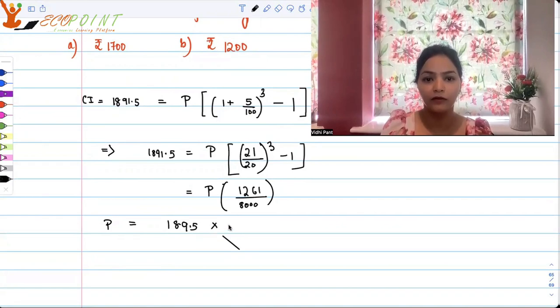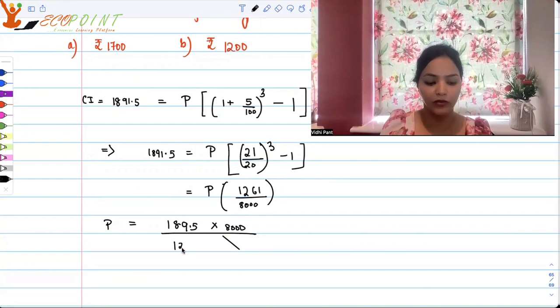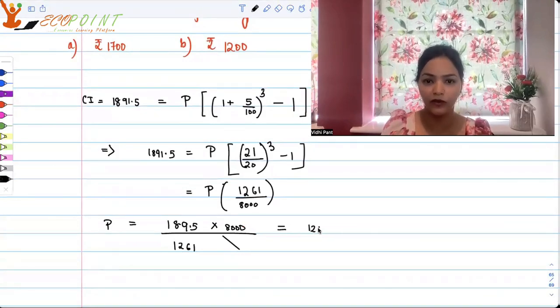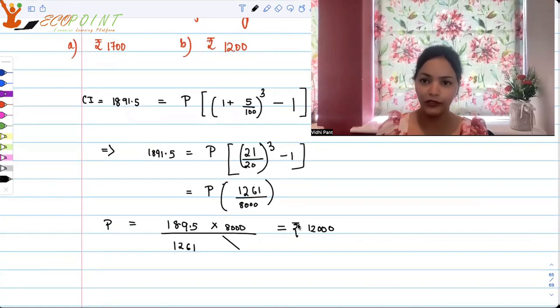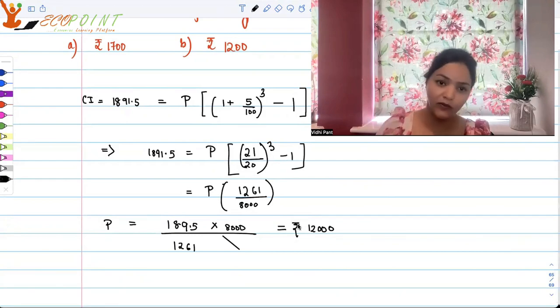And this means the principal amount is 1891.5 multiplied by 8000 divided upon 1261. And with the help of a calculator or some simplifications, you will get to know that this turns out to be 12,000. So this compound interest for 5% for three years is actually on the principal 12,000.